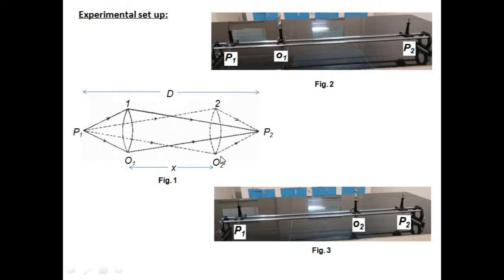X is the distance between O1 and O2, and capital D is the distance between the object pin and the image pin. Figure 2 represents the optical bench with the first position of the lens, that is O1, as explained in the ray diagram. Figure 3 represents the optical bench with the second position of the lens, that is O2. So now let's do the experiment.